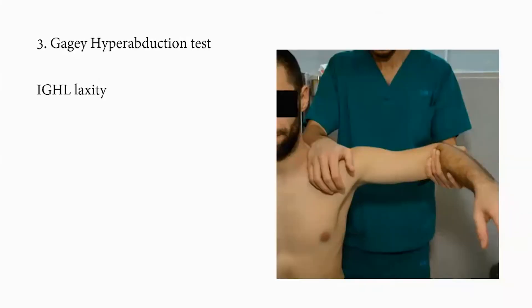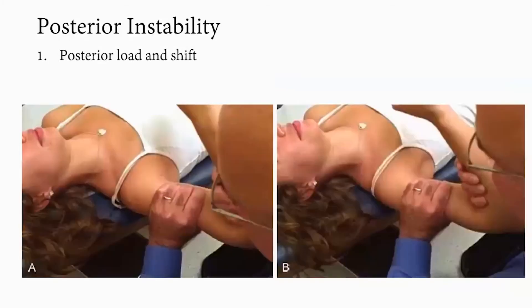The Gagey hyperabduction test assesses inferior glenohumeral laxity. It's important to stabilize the scapula and passively abduct the shoulder — passive abduction greater than 105 degrees indicates inferior glenohumeral laxity.